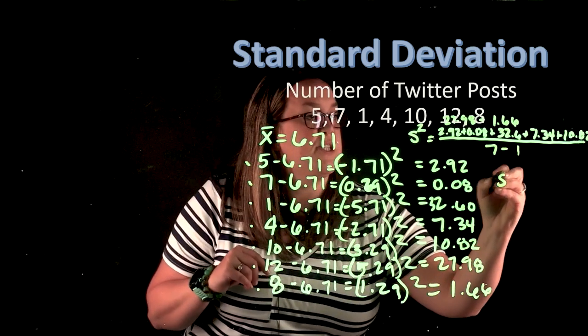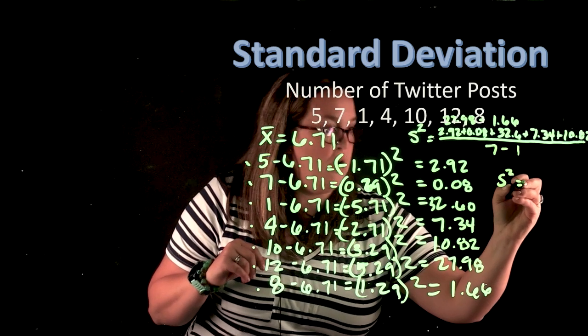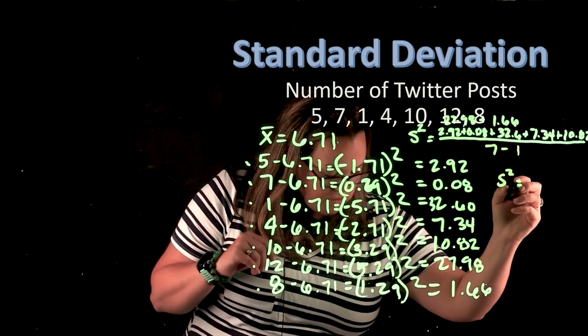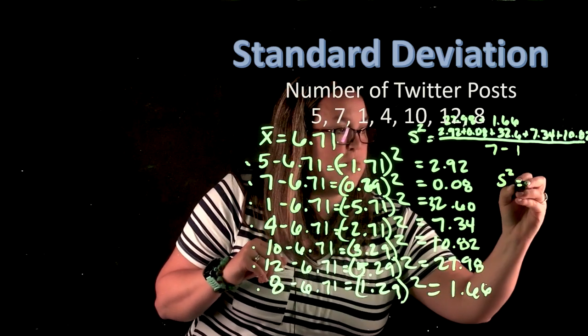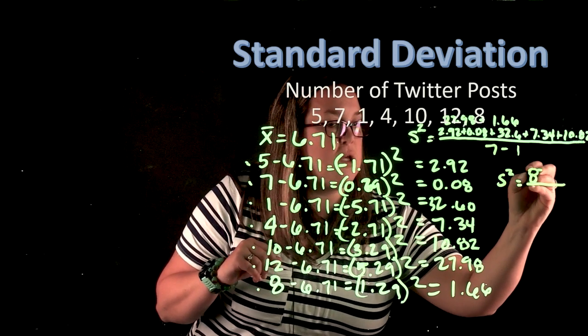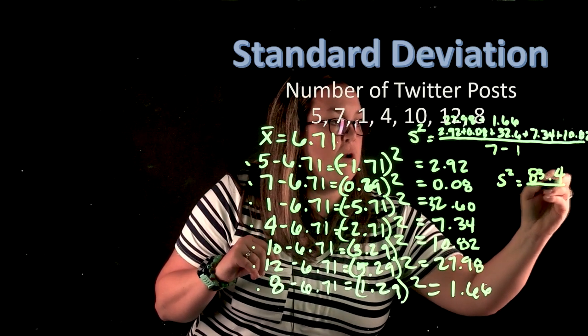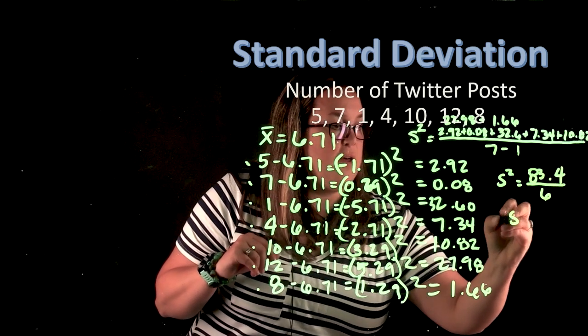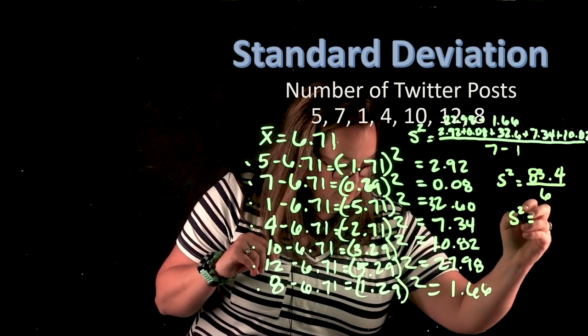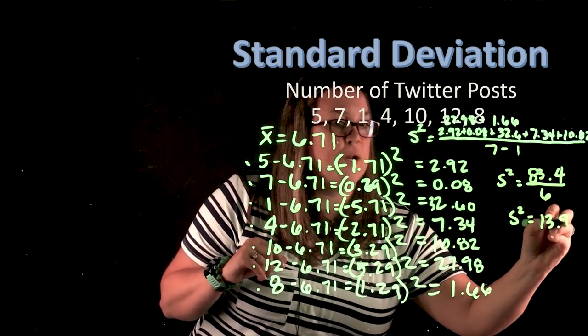Now, if I were to sum that numerator, if you don't believe me, you can calculate that yourself, but that comes out to be 83.4. And we're dividing by 6. So the variance comes out to be 13.9.